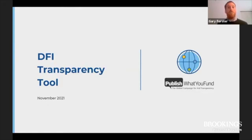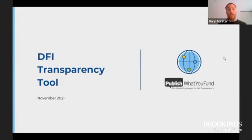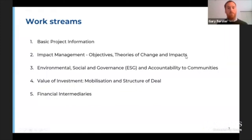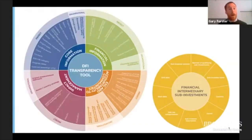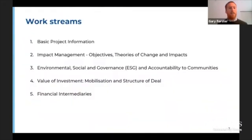We started this initiative because stakeholders, including DFIs themselves, were seeking to move the transparency debate from one based on principles and high-level commitments to one based on a granular definition of what DFI transparency should be. The goal was to identify the key fields of information which stakeholders need, then to define those fields, and then to encourage disclosure in a timely and comparable way across the world's major DFIs. The first step was to break down the universe of information into manageable chunks. All overseen by our project advisory board, we ended up with five work streams: the first was on basic project information, the second on impact management — which included objectives, theories of change, and impact — the third on environmental, social, and governance, and accountability to communities, the fourth on value of investment, mobilization, and structure of the deal, and the fifth work stream focused on financial intermediaries.